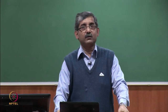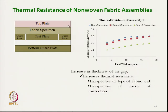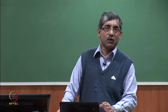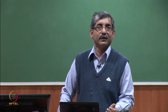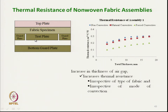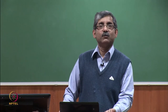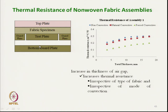Heat transmission was assessed using a guarded hot plate system, consisting of a bottom plate, test plate, guard plate, and fabric specimen. Three modes of convective heat transmission were studied. In non-convective mode, a top plate is used to stop air movement so that heat is transmitted only through conduction and radiation.